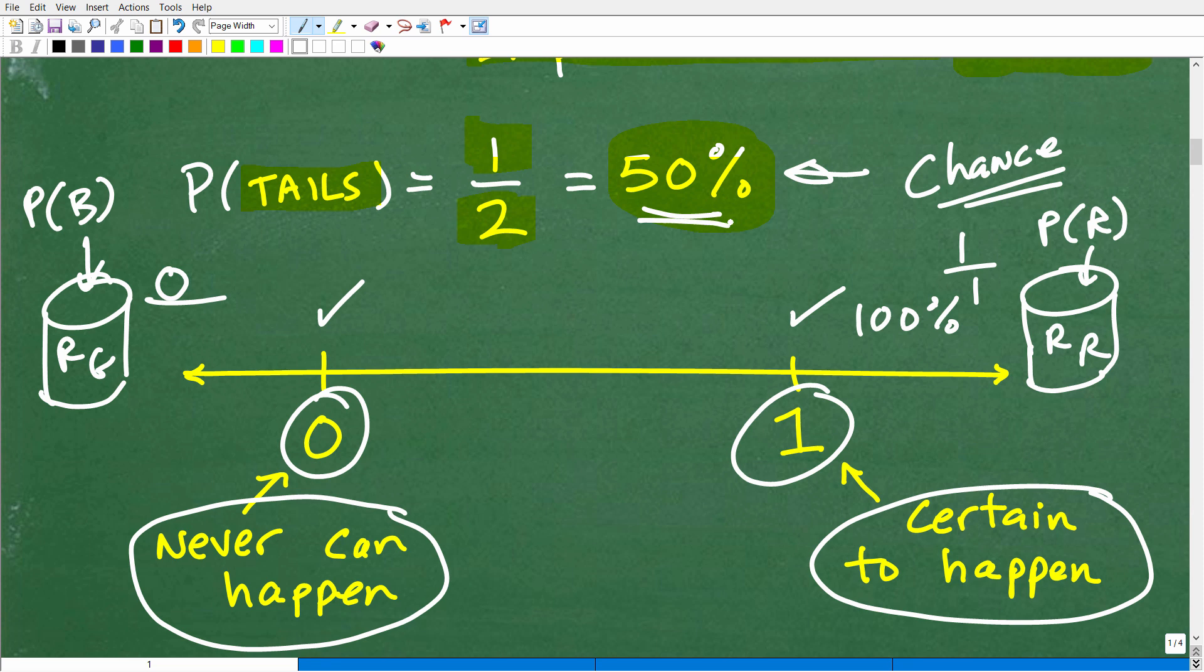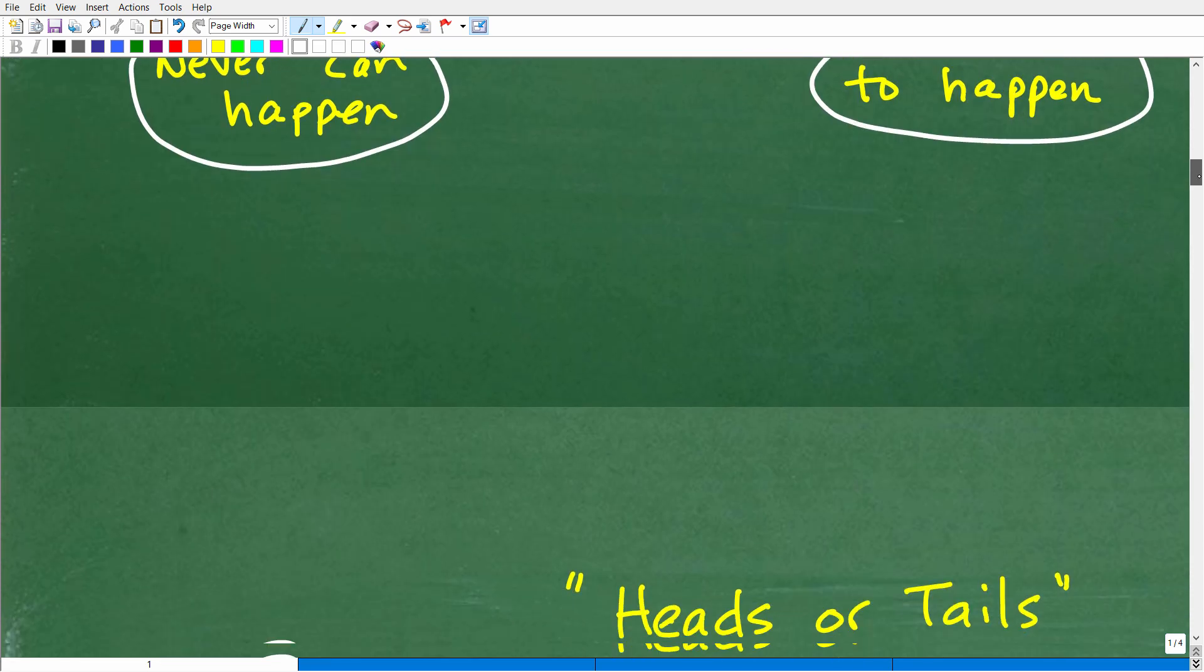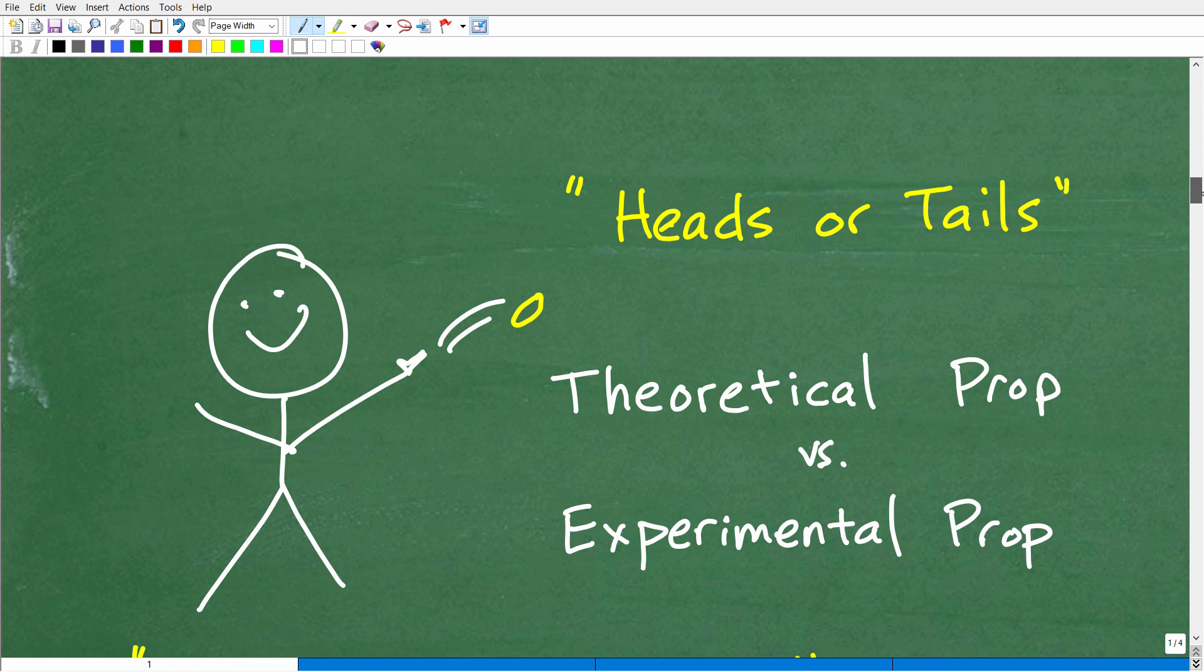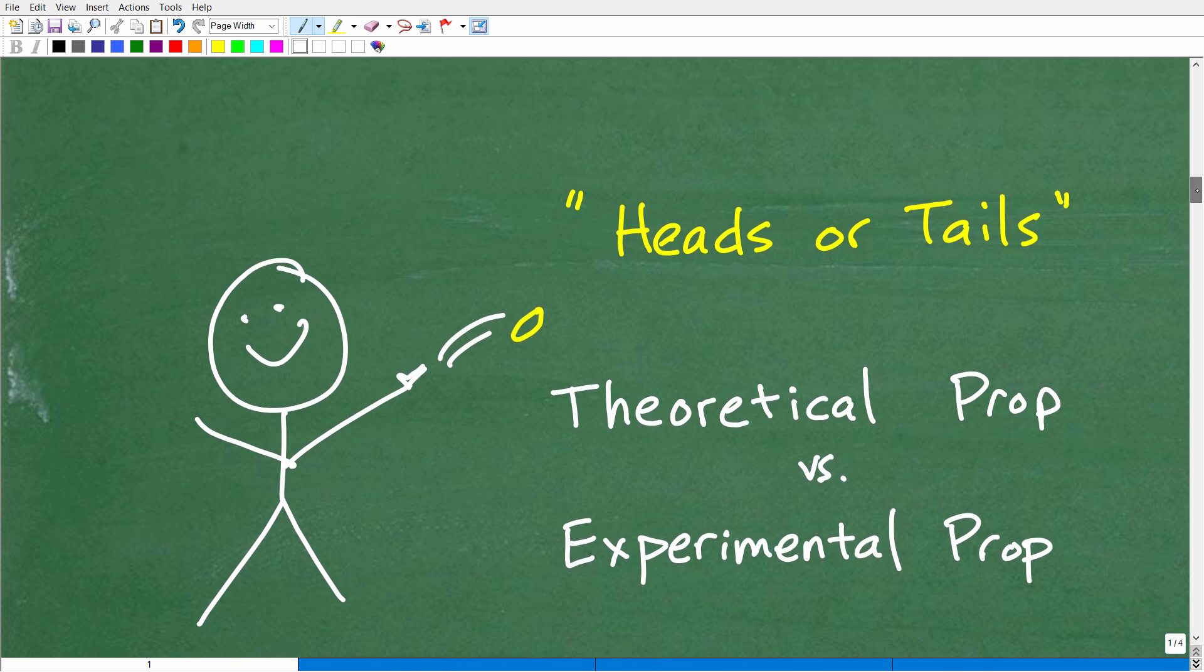All right. So, again, this is just basic probability concepts. But let's go ahead and look at something kind of interesting here. All right. Let's play that game of heads or tails, everyone's favorite game. And I want to talk to you about theoretical probability versus experimental probability. So, now you're saying, hey, wait a minute here. You're giving me two different probabilities. Well, yes, I am. And this is very, very important.